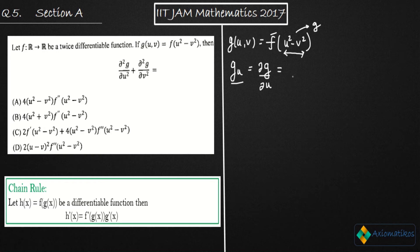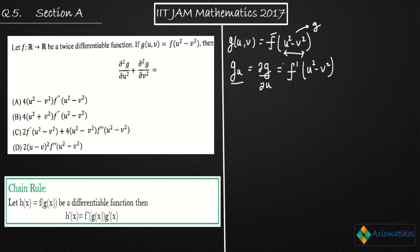Now what happens when we differentiate? First, differentiate your outer function f, and then differentiate the inner function g. So differentiating with respect to u using the chain rule, I get f'(u² - v²). Then I differentiate u² - v² with respect to u, which gives 2u. So g_u = f'(u² - v²) · 2u.